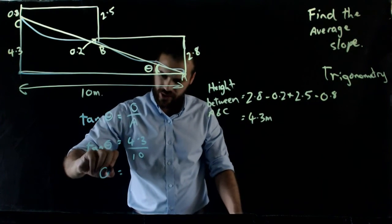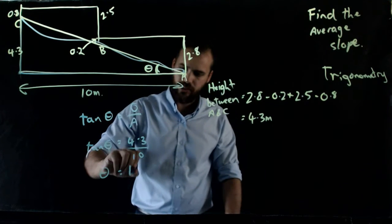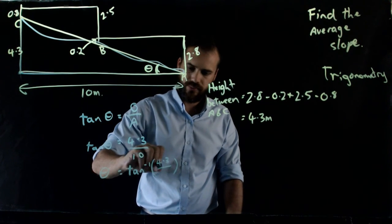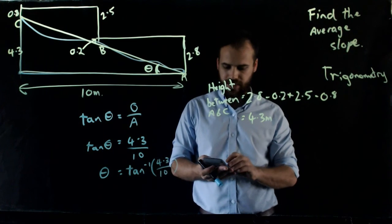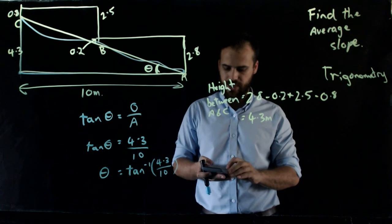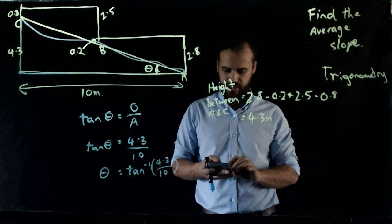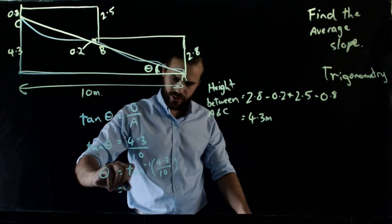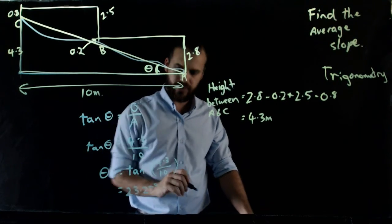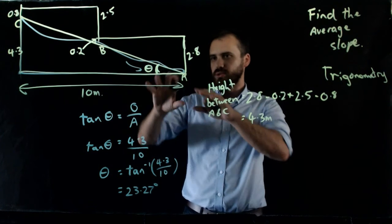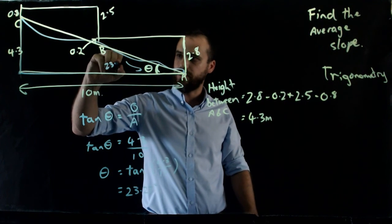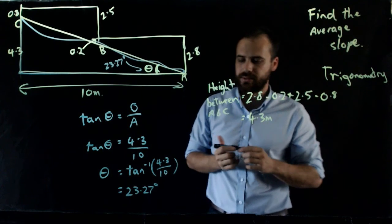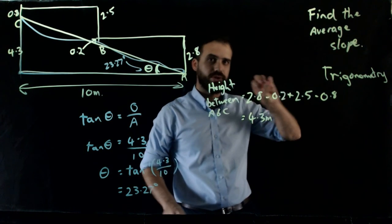If we want to know what theta is, we need to use inverse tan — shift tan, or tan to the negative 1, whatever you want to call it. Pick up your calculator and do: shift tan of 4.3 over 10. That gives us 23.27 degrees. So the average slope between point A and point C is 23.27 degrees. That's a little bit of trigonometry to find the average slope. Thanks a lot.